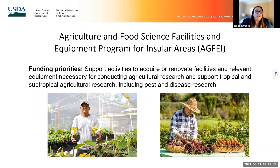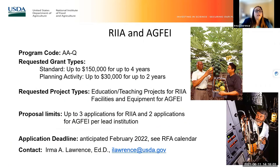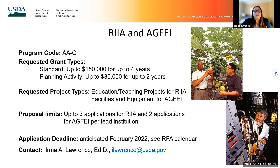For RIA and AGFA, standard grants are up to $150,000 for up to four years; planning grants are up to $30,000 for up to two years. The application limit for RIA is three, and for AGFA is two per lead institution. The application deadline is February 2022.